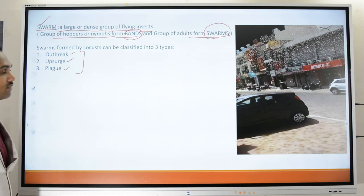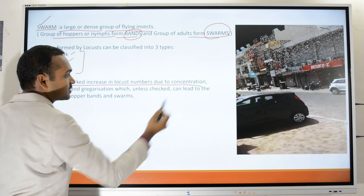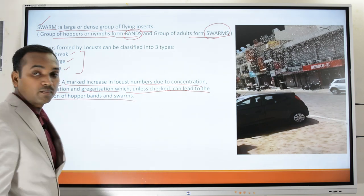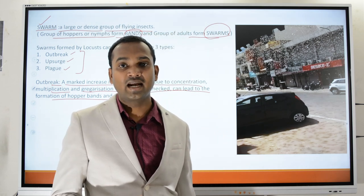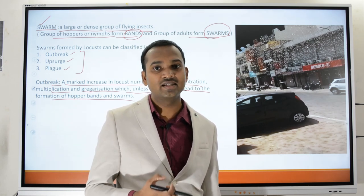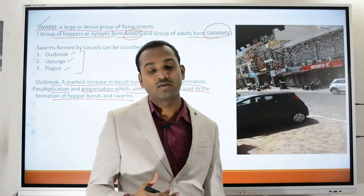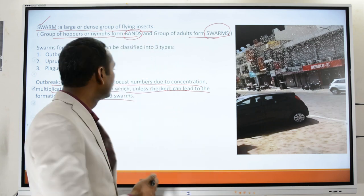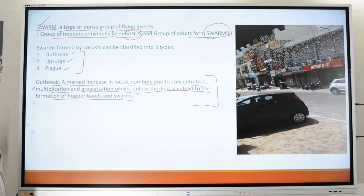An outbreak is a marked increase in locust numbers due to concentration, multiplication, and gregarization which, unless checked, can lead to formation of hopper bands and swarms. Normally locusts reside in desert areas in a solitary phase, but at times, because of increased reproduction and gregarization, numbers increase — leading to what is called an outbreak.